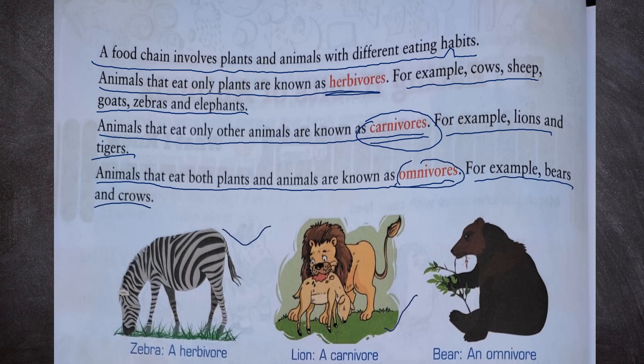Zebra is a herbivore. Lion, as we can see, is a carnivore. Whereas bear is an omnivore because bear eats both plants as well as animals. So bear is an omnivore, lion is a carnivore, and zebra is a herbivore.